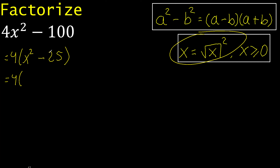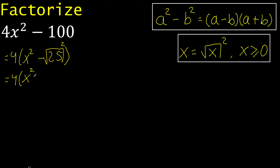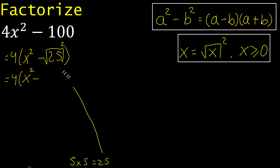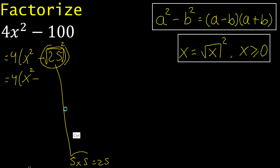Therefore, like this, root exponent. 25 — 2 equal numbers that multiply is 25: 5 multiplied by 5 is 25. Therefore, here is 5.